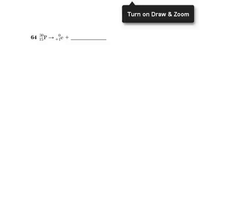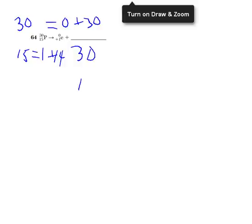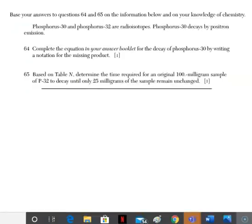So, for the top here, I have 30 is equal to 0 plus what number? Well, obviously, it has to be 30. So, we're talking about a mass number of 30. And then, for the bottom, I have 15 is equal to 1 plus what number? Well, it has to be 14, because 14 plus 1 is 15. So, 30 as the mass number and 14 as the atomic number. And then, make sure you go to the periodic table to find element 14, which is silicon SI. For 65, we're going to table N.